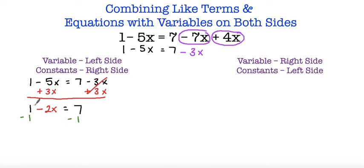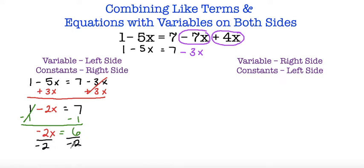Positive 1 and negative 1 cancel each other out. I'm left with negative 2x is equal to 7 minus 1, and 7 minus 1 is 6. So negative 2x is equal to 6. To get x by itself I divide both sides by negative 2. I end up with x is equal to 6 divided by negative 2 — positive divided by a negative is a negative, and 6 divided by 2 is 3 — so x is equal to negative 3.